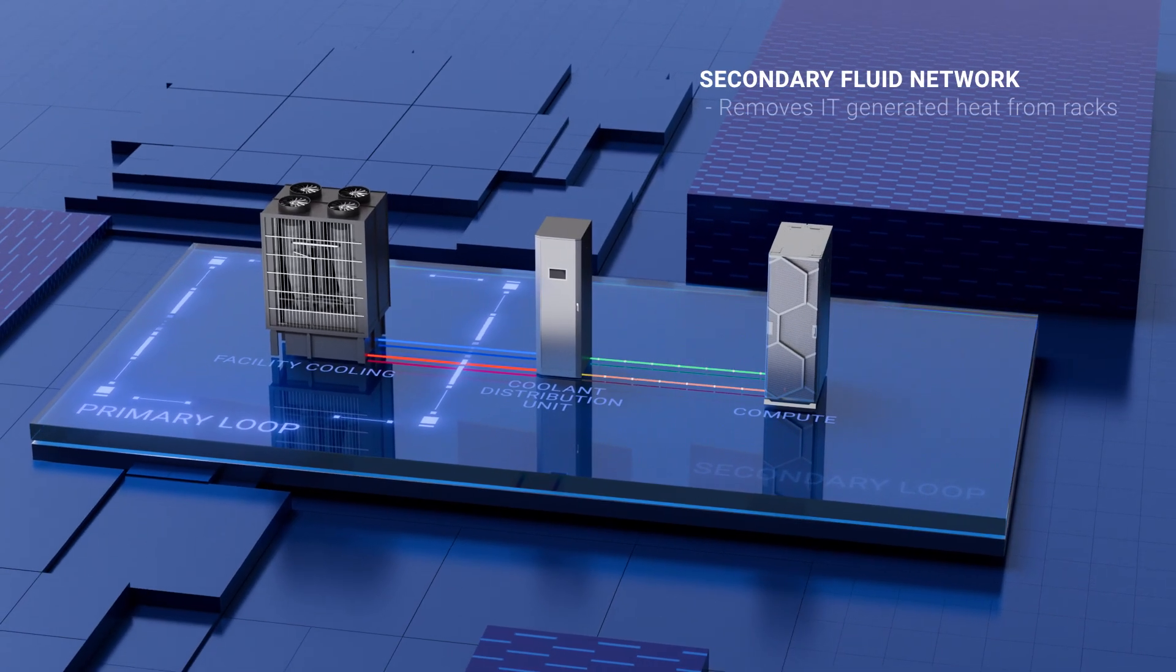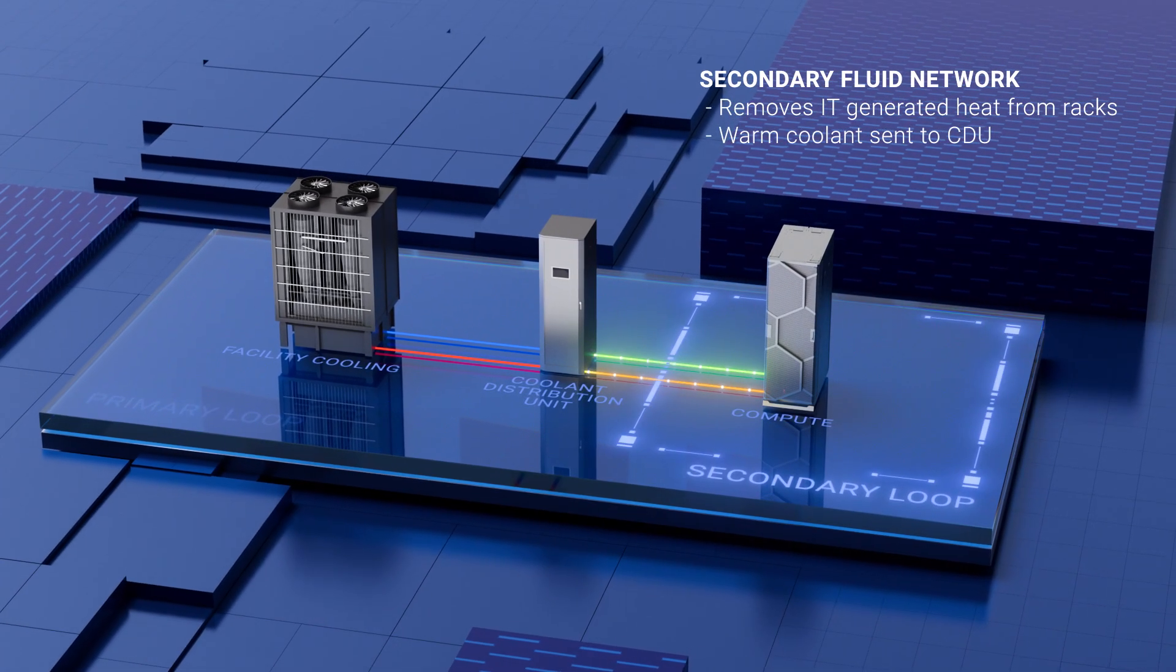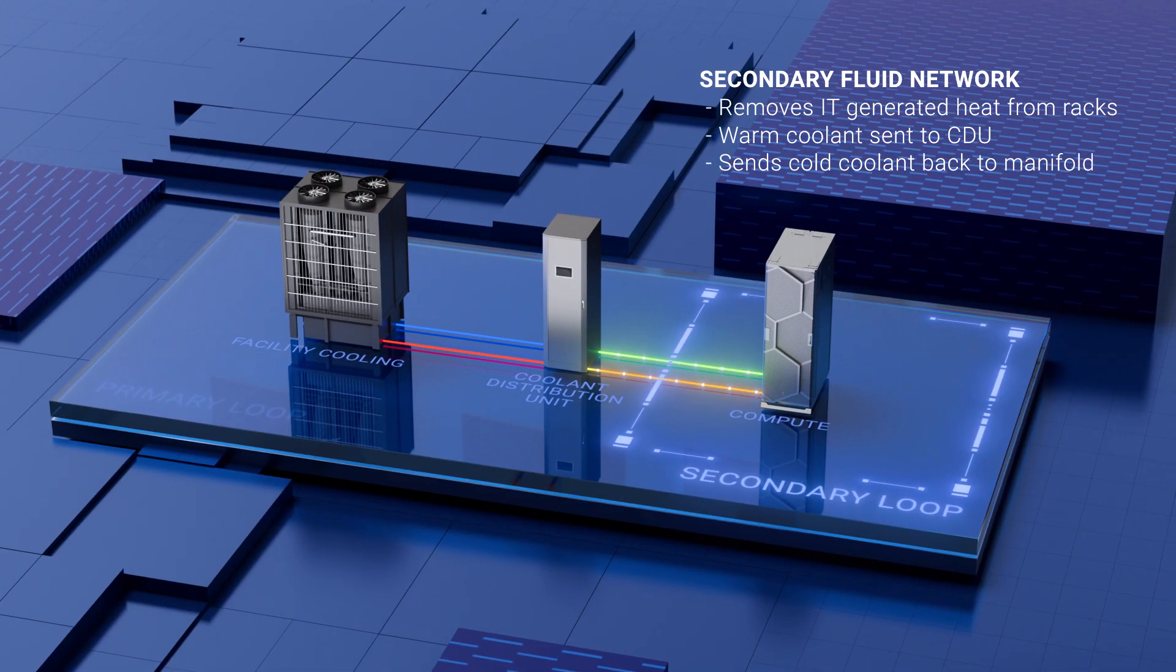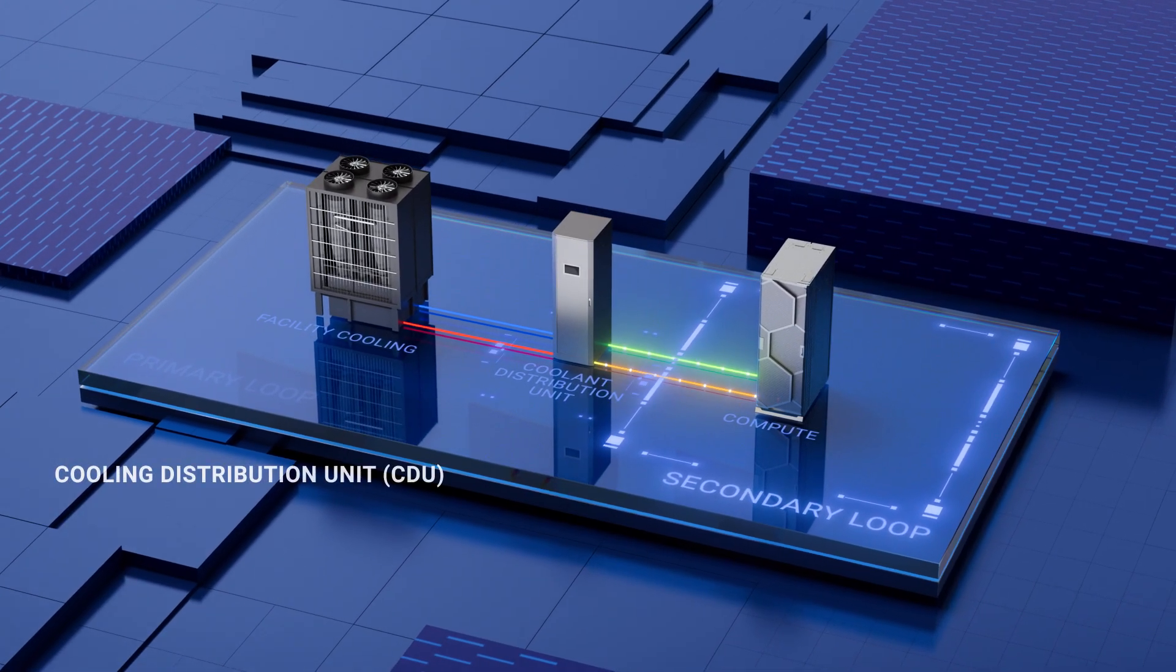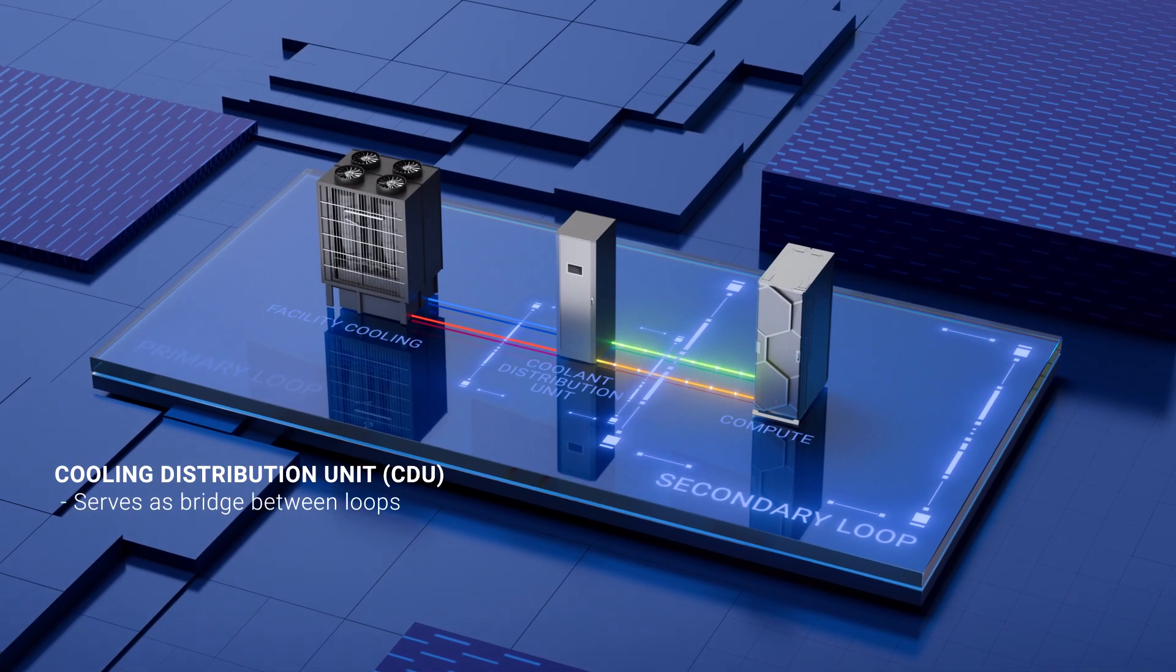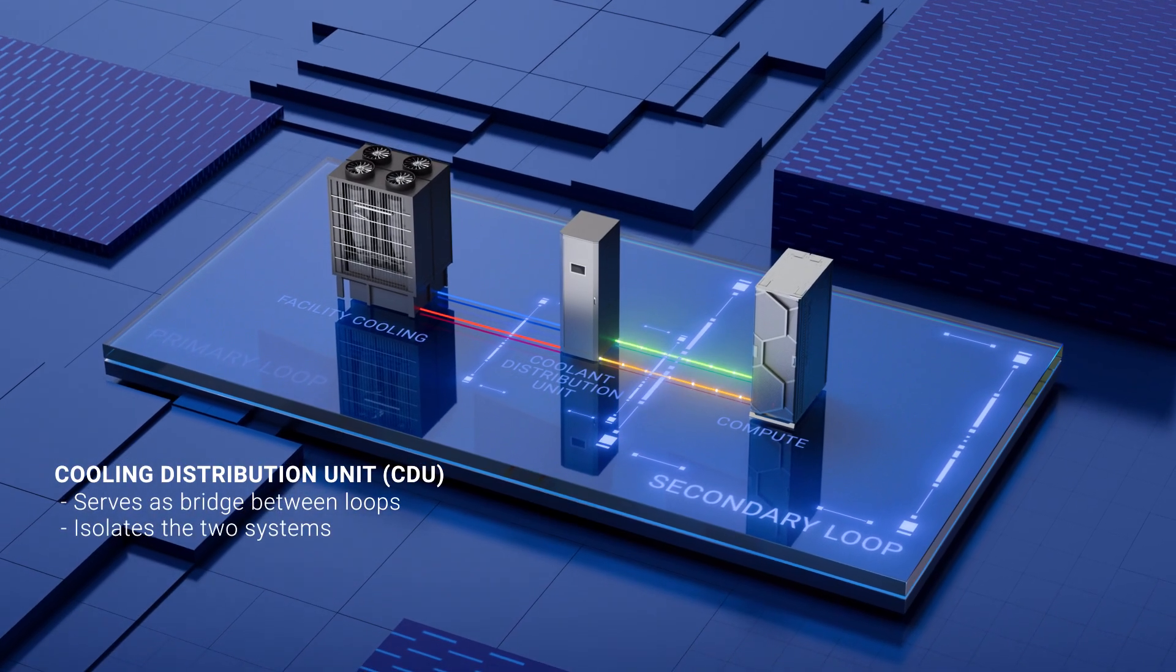The secondary fluid network refers to the circulation of coolant between the cooling distribution units, CDUs, and the CPU and GPU cold plates where most of the heat is generated. The CDU serves as the bridge between the loops and isolates the two systems for heat exchange.